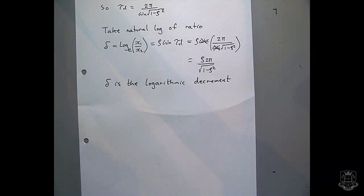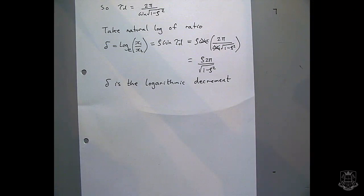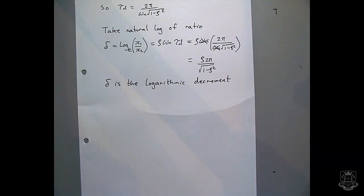What this means is that we can take a free vibration test — which is what you'll do in the lab — and look at the different heights of the peaks. From that we can get information about what ζ is. ζ, remember, is the non-dimensional damping ratio of the system; it tells us one of the key properties. All we have to do is record the free decay of the system, look at the amplitudes, and measure their relative difference.